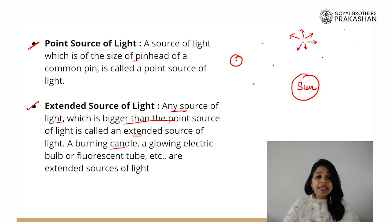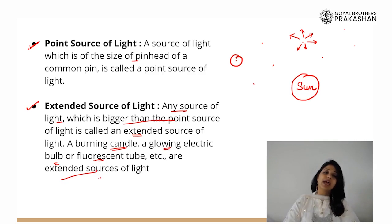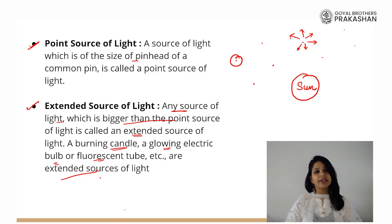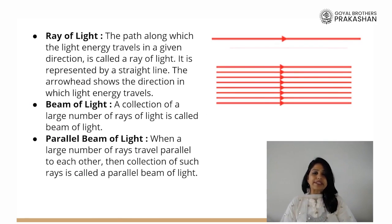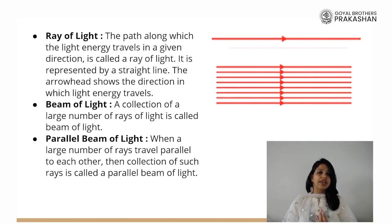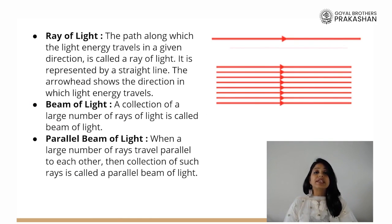A burning candle, a glowing electric bulb, and a fluorescent tube etc. are examples of extended sources of light. Now when we talk about light, we cannot see it — light is an invisible form of energy.